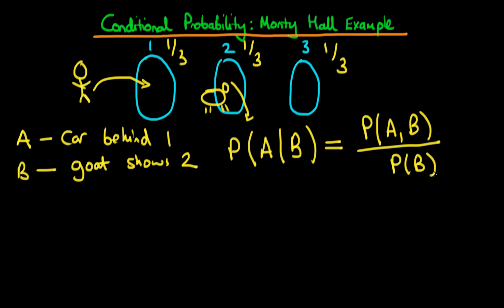How do we work out each of these in turn? Starting with the numerator: the probability of events A and B both occurring. The probability of event A is one third. The probability that the game show host will show a goat behind door two, given that the car is behind door one, is one half — because half the time the host will open door two and half the time he will open door three.